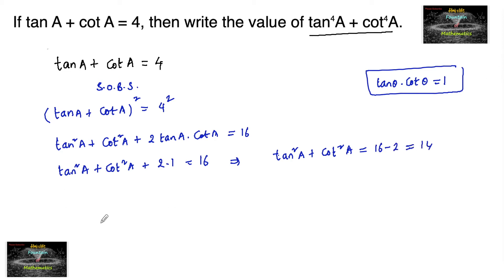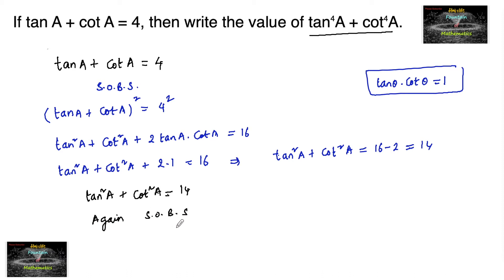So we have tan²(a) plus cot²(a) equals 14. Now squaring both sides again: tan²(a) plus cot²(a) whole square equals 14 squared.